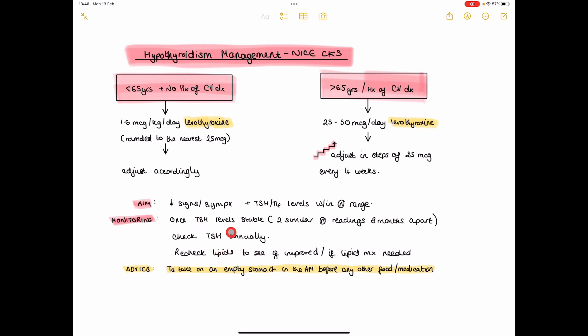Once the levels are stable, you can also recheck the patient's lipids if there was some abnormality there. Because as we know, hypothyroidism is a cause of deranged lipids. If they've improved, all well and good. If not, then it probably wasn't the hypothyroidism causing it, so start them on some lipid management.